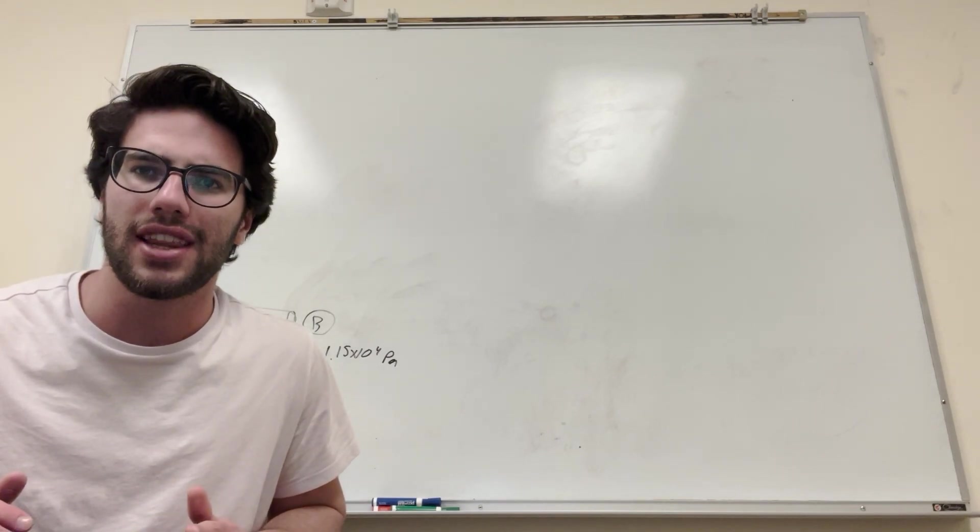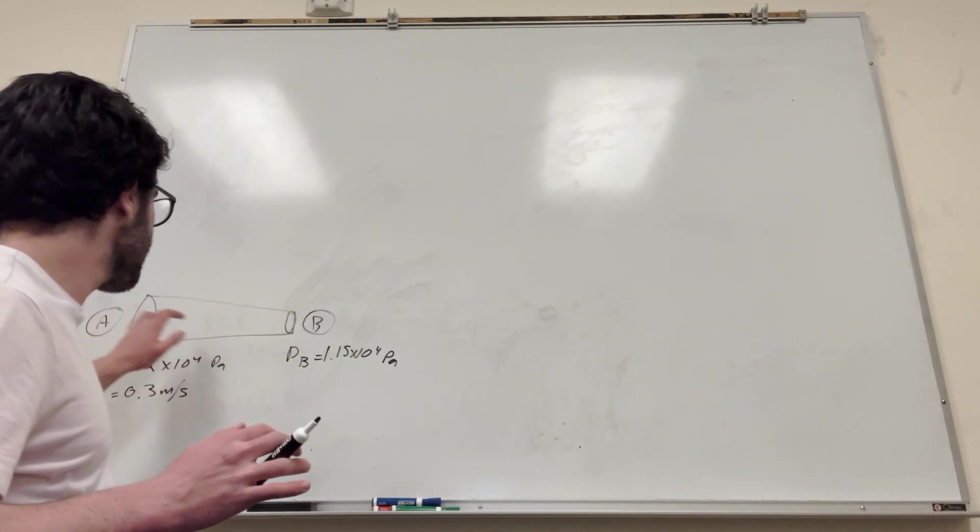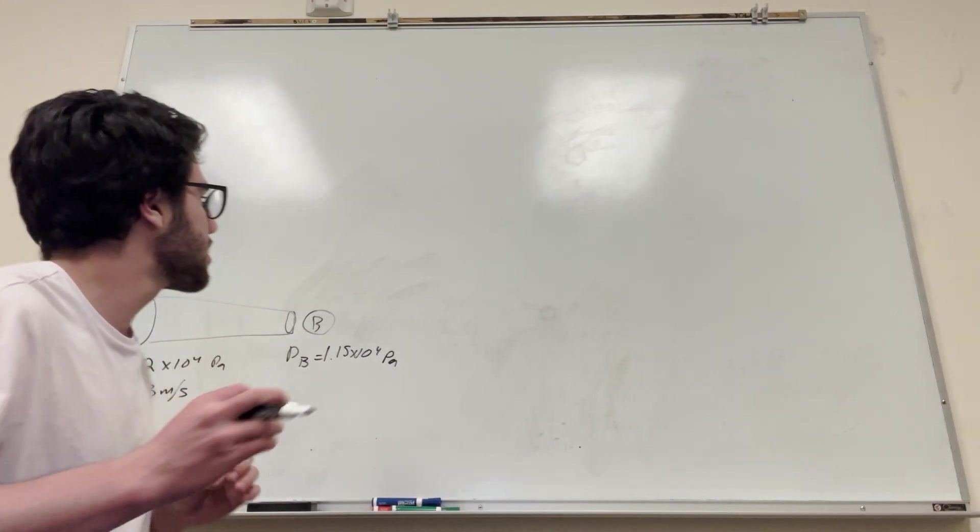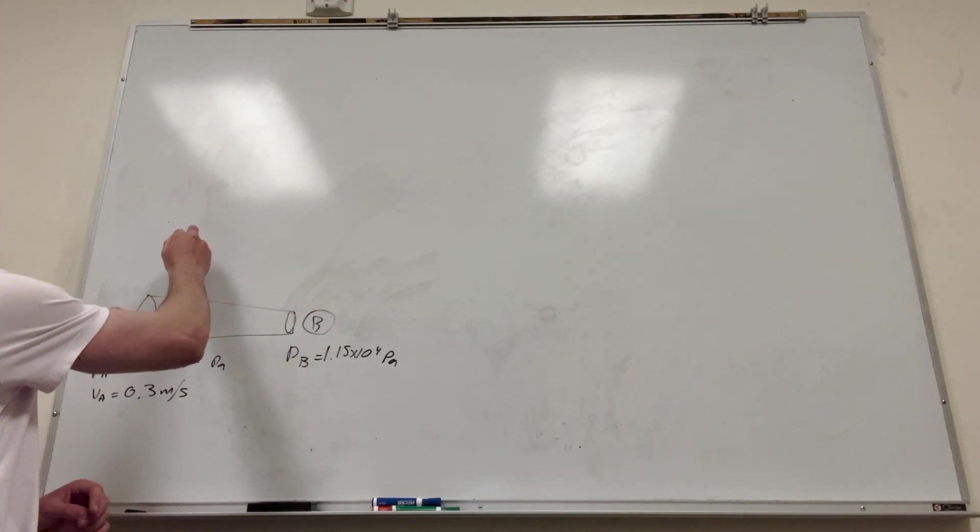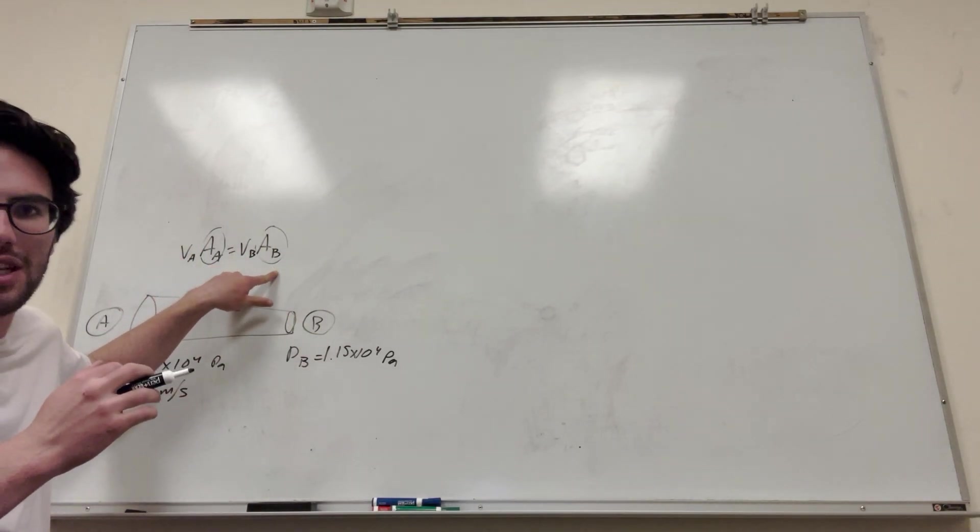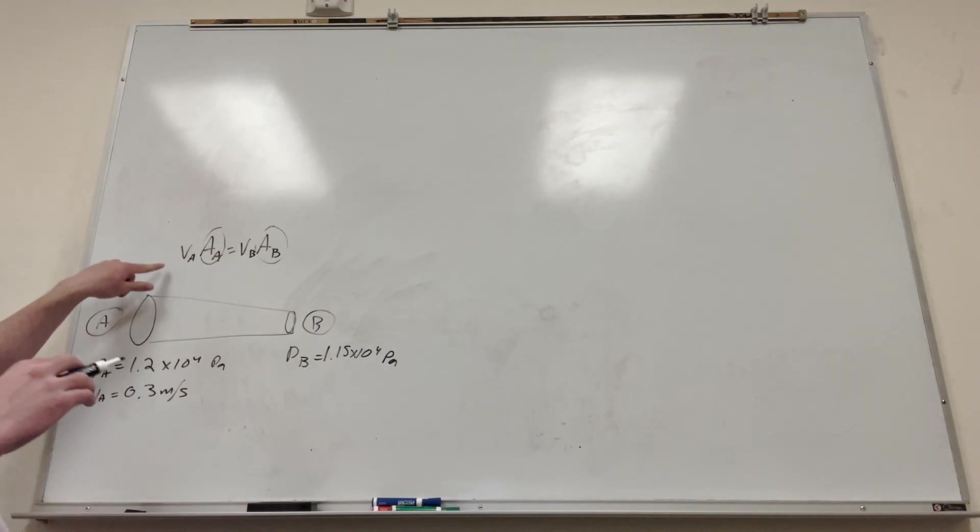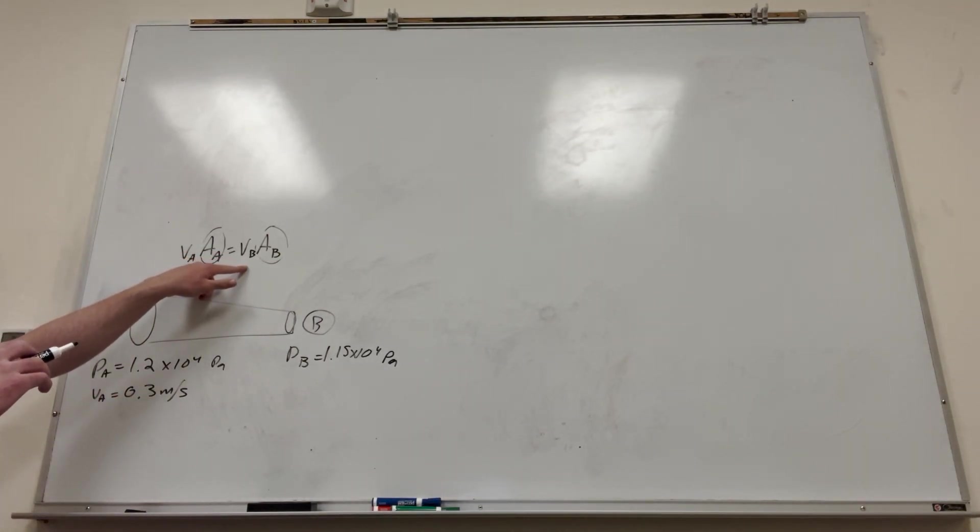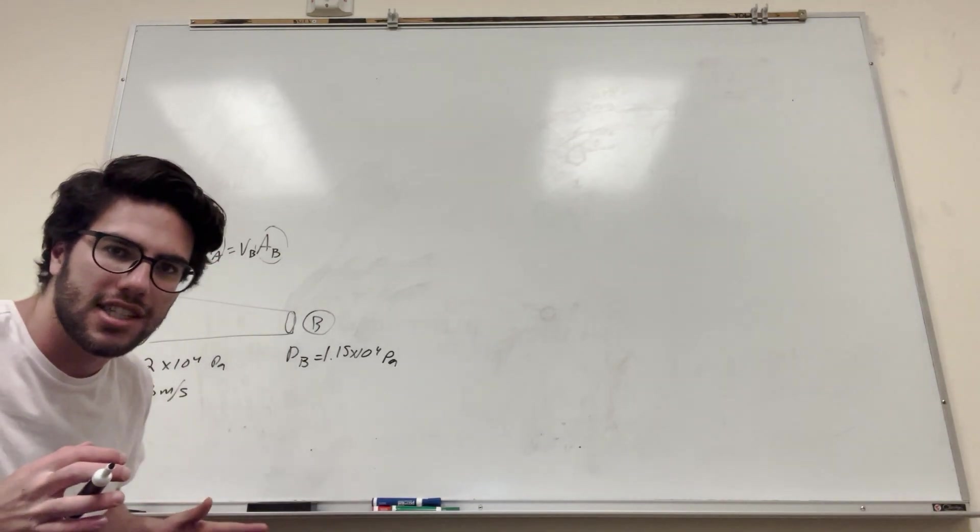So to do that, we're going to need to find the areas at each one of these points. And to find the area at each one of these points, we're going to need to use this equation here. Velocity at A times the cross-sectional area of A is equal to velocity at B times the cross-sectional area of B. So we have velocity at A, and we're going to need velocity at B. How are we going to find velocity at B?